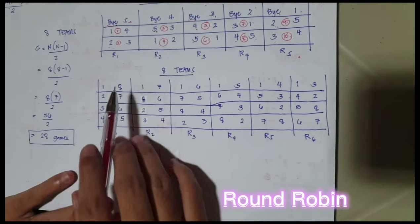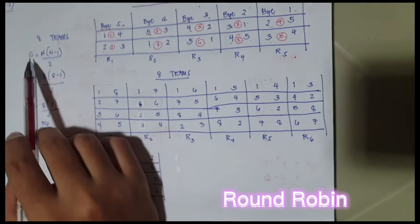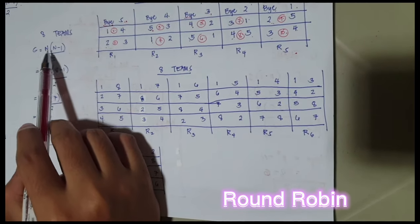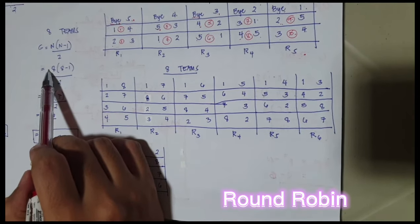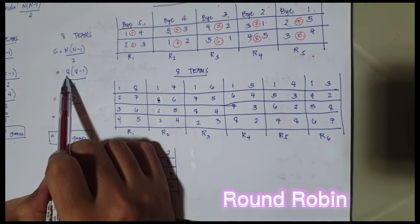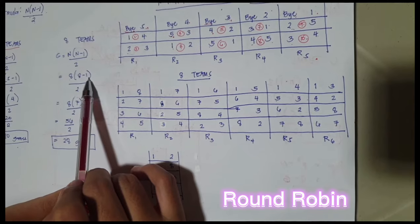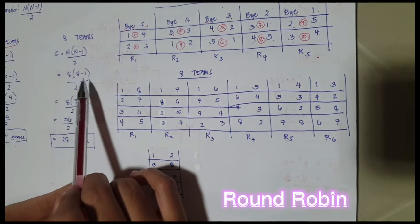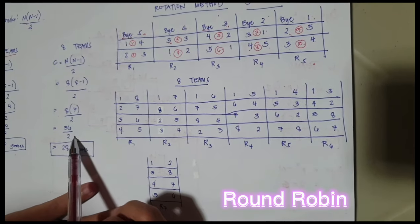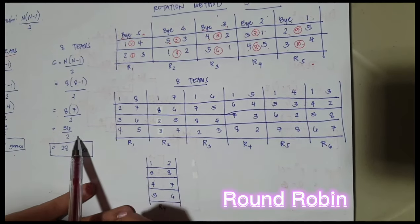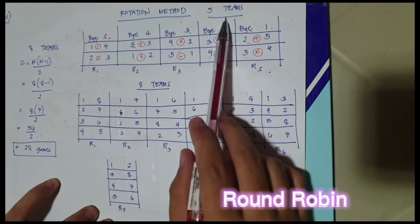For the even numbers, so let's say for example 8 teams. So we're going to compute the number of games using the formula g equals n times n minus 1 over 2. So we are going to replace n with 8 since there are 8 teams. So 8 times 8 minus 1 over 2. So 8 minus 1 equals to 7. So 8 times 7 equals to 56 over 2. So 56 over 2 equals to 28 games.